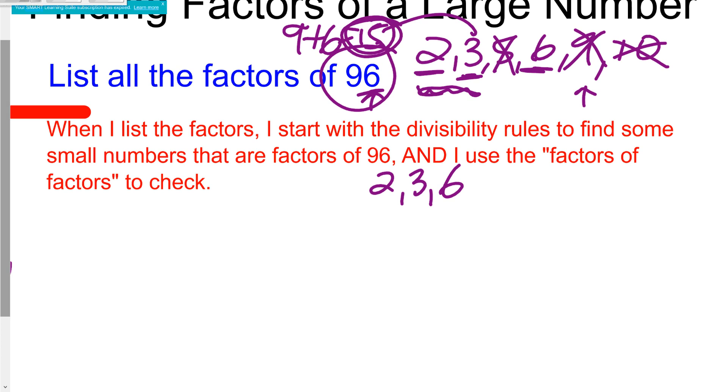So the next thing I'm going to do is get started by writing my first and last factor: 1 and 96. We always know that one factor is always going to be there. I know 2 is going to work.